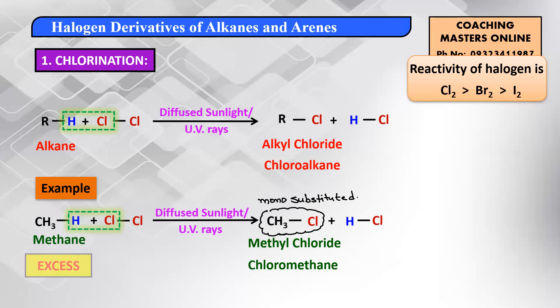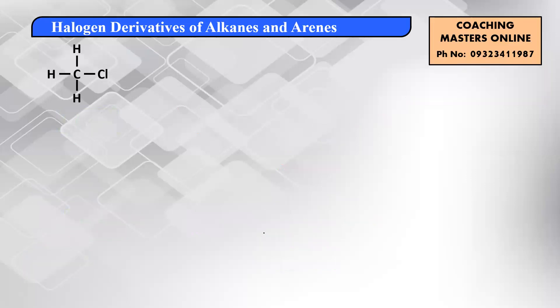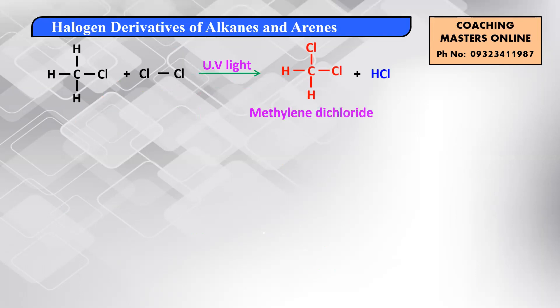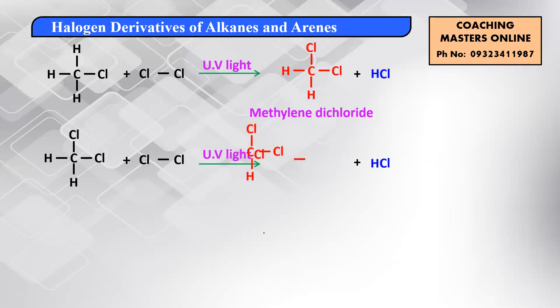If halogen is in excess, further substitution occurs. Starting with CH3Cl, with excess chlorine in UV light, one more hydrogen combines with Cl to give HCl, and you get CH2Cl2 — methylene dichloride. Taking that again with excess chlorine under UV light, another hydrogen is substituted giving HCl and CHCl3, which is chloroform.